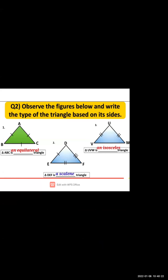Question 2: triangle DEF. In DEF, all the sides are not equal — one side has a single mark, another has a double mark, and another has a triple mark. If all the sides are not equal, it is known as a scalene triangle. A scalene triangle has no equal sides.